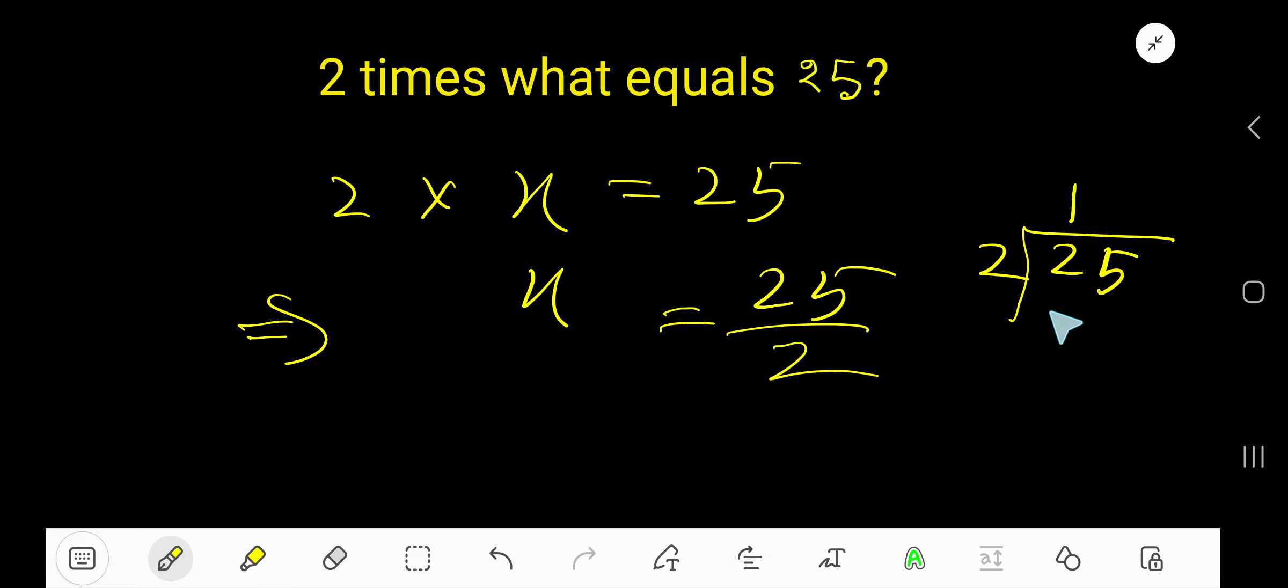2 goes into 2 how many times? 1 time. 1 times 2 is 2, subtract to get 0, bring down the 5. 2 goes into 5 how many times? 2 times. 2 times 2 is 4, subtract to get 1.